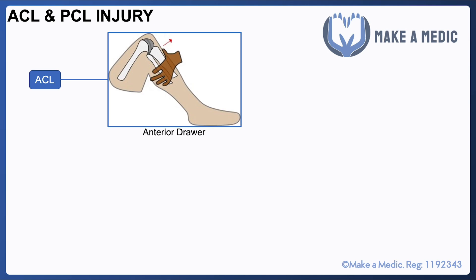ACL and PCL injuries are usually diagnosed using a combination of examination findings and MRI scans. With anterior cruciate ligament injuries, there are two specific examination tests. The anterior drawer test involves gripping the patient's calf around the upper half of the tibia and fibula and gently tugging it forwards to see whether it moves anteriorly at the knee joint.